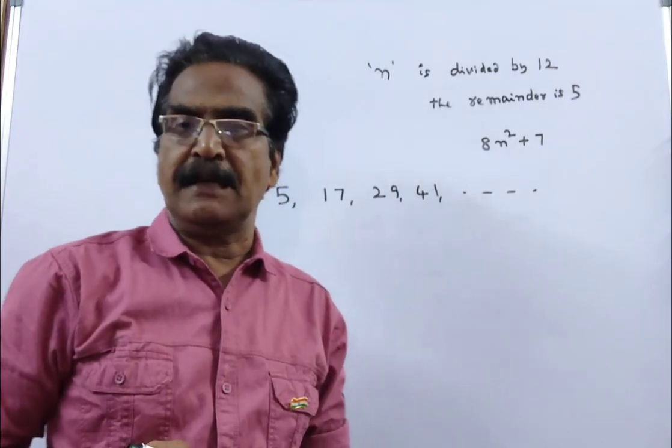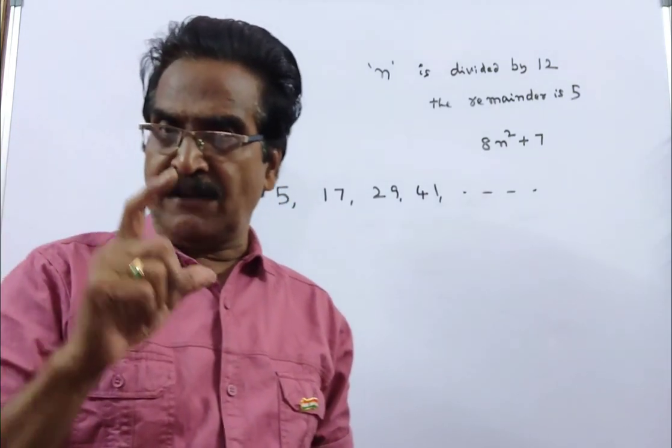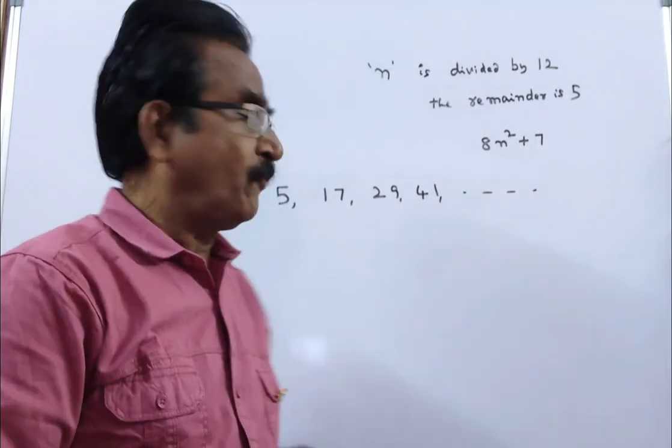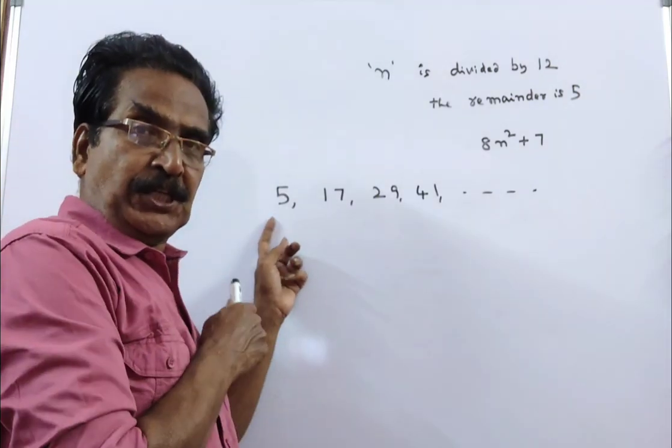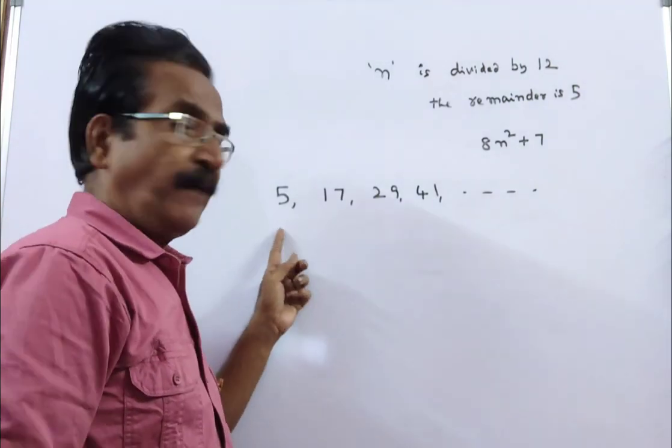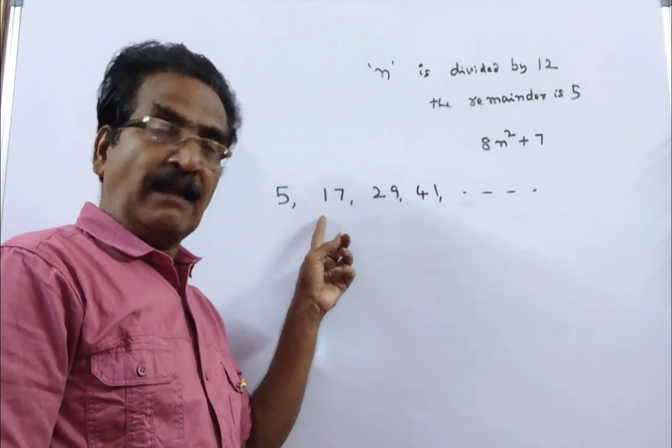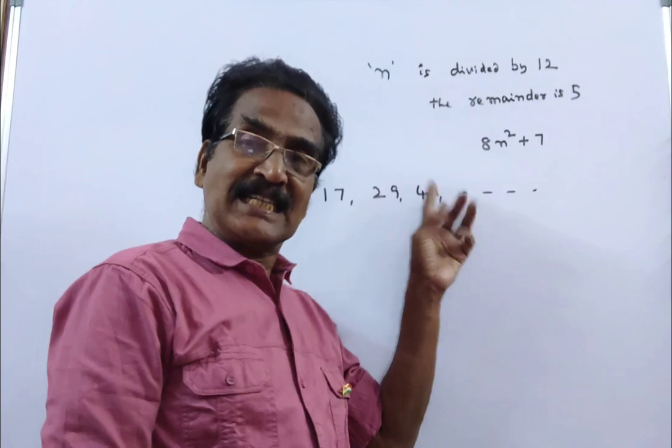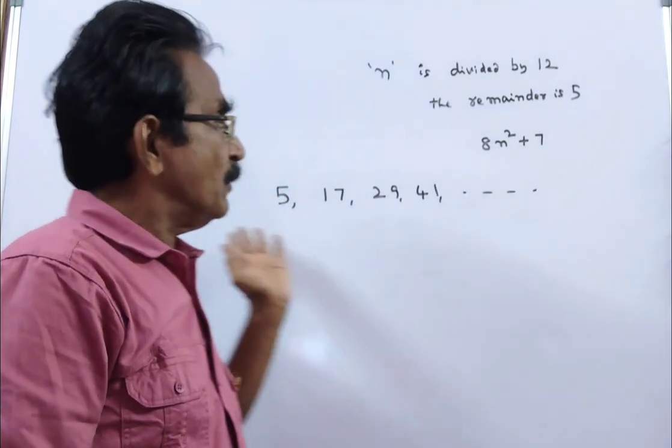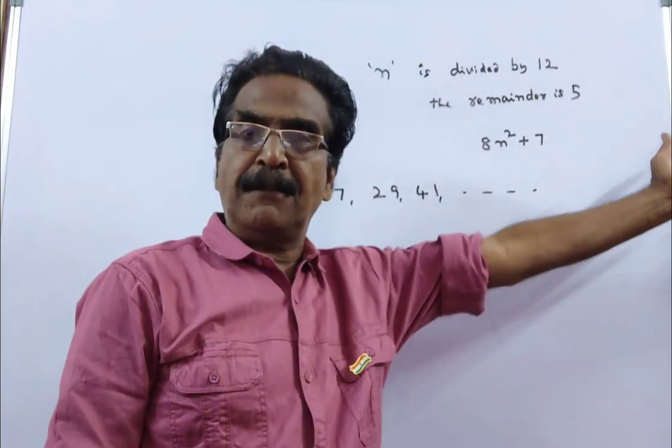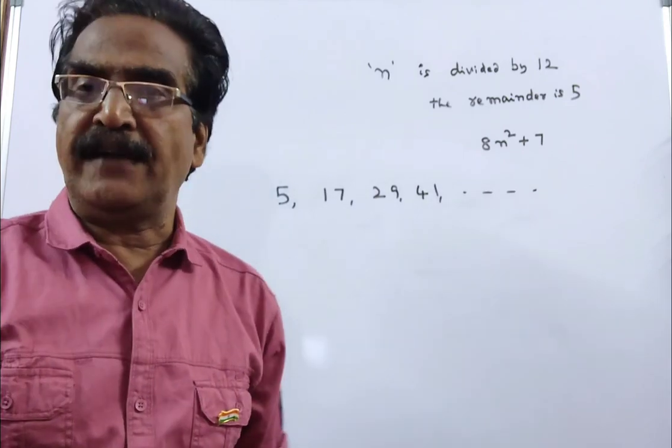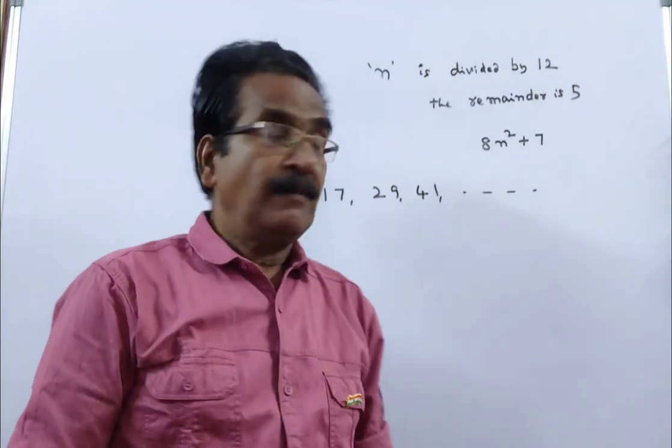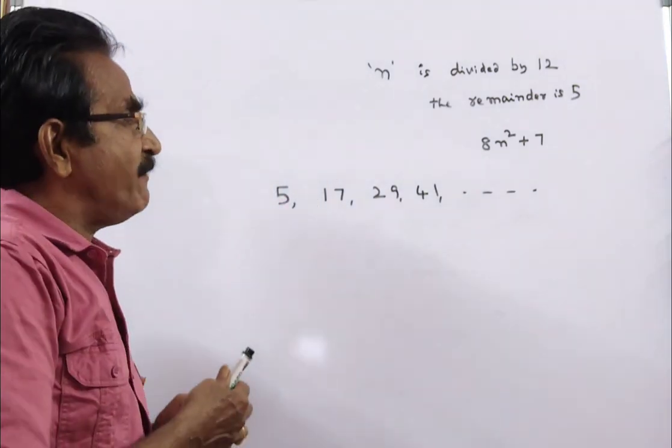These are the numbers which give remainder 5 when divided by 12. 12 times 0 is 0, plus remainder 5. 12 times 1 is 12, plus remainder 5. 12 times 2 is 24, plus remainder 5. 12 times 3 is 36, plus remainder 5. These are the set of numbers which give remainder 5 when divided by 12.